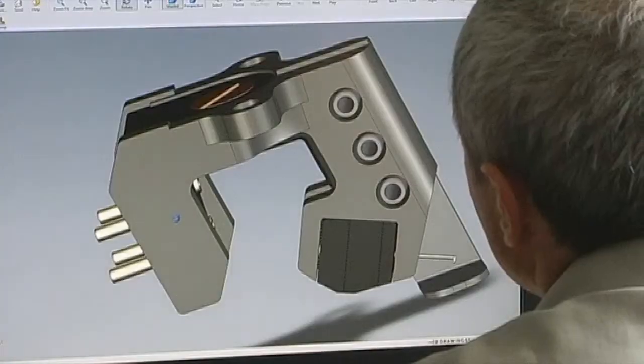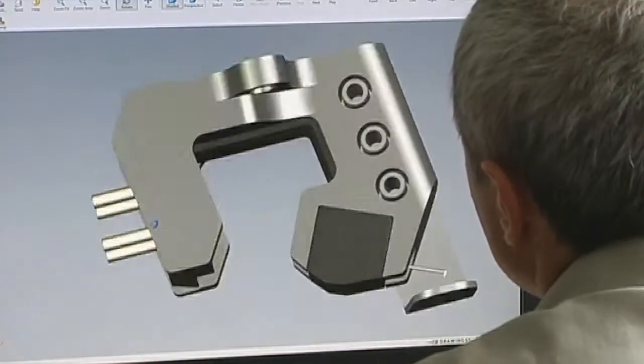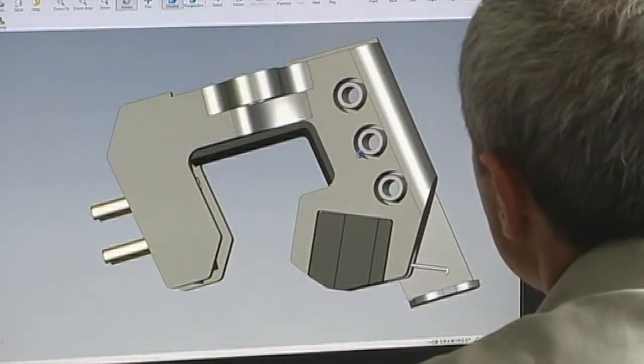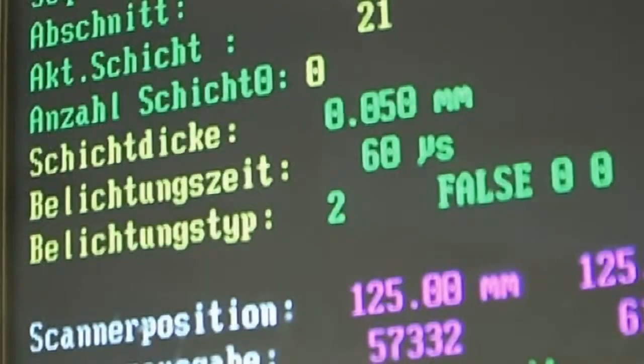The MCA90 cartridge has a body which is designed from a minimalistic point of view. Only the parts that are needed are included. Adjusting parameters in the SLM process gave the MCA90 body its unique properties: high stiffness and high internal damping.